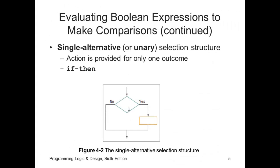The second type of selection structure is the single alternative, or unary selection. Single being one action or path to follow. If the expression evaluates to true, you follow the path and perform some sort of action. If the expression evaluates to false, then there is no special action to take. We simply exit the structure.